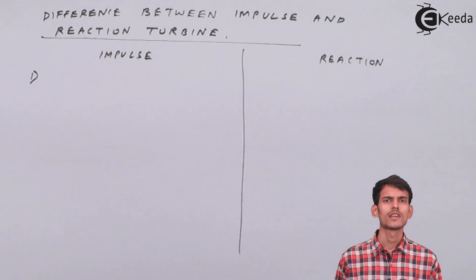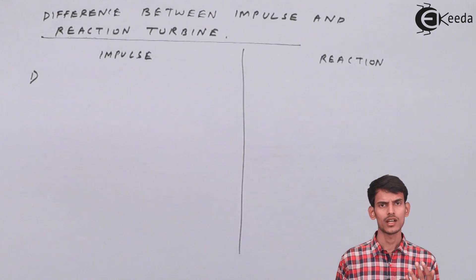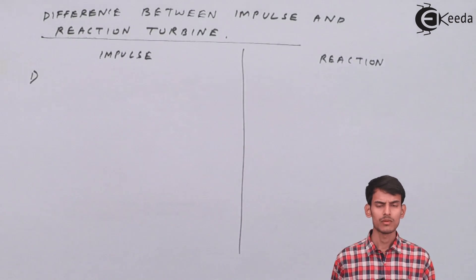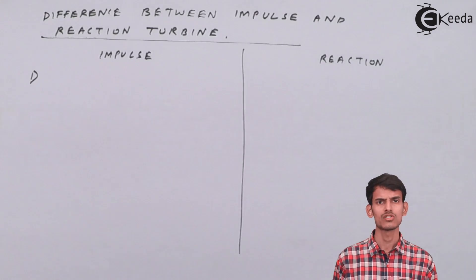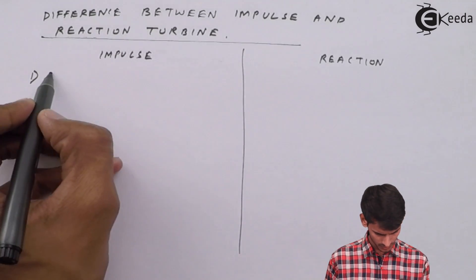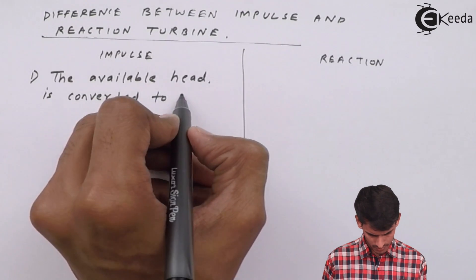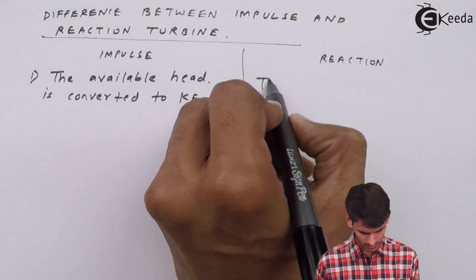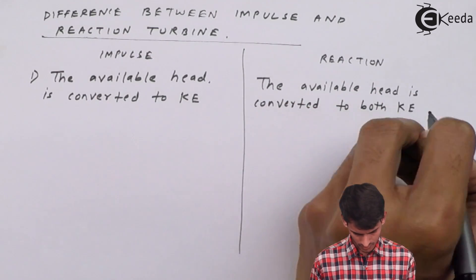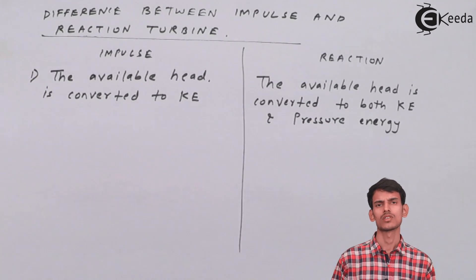The first difference: in an impulse turbine, all the energy of the water — all the head that the water has — is converted into kinetic energy. In a reaction turbine, all the energy of water is converted into both kinetic energy and pressure energy. This is the main difference between them, based on the conversion of different energy types.